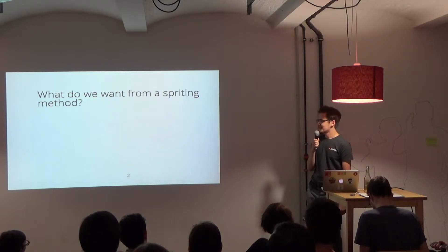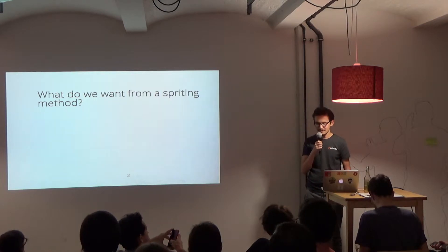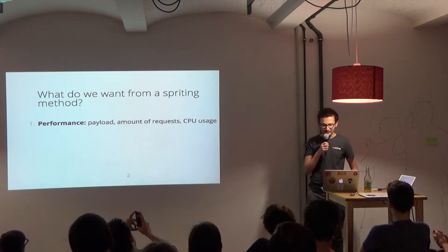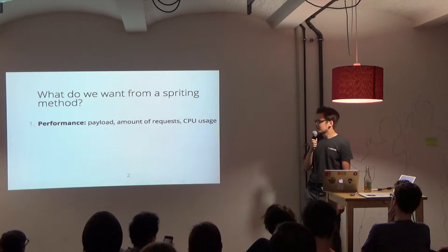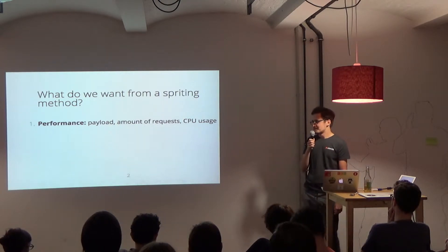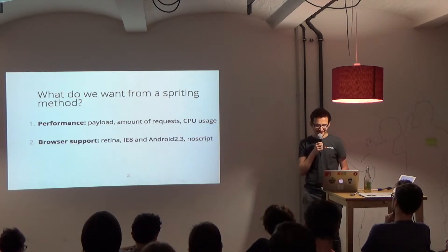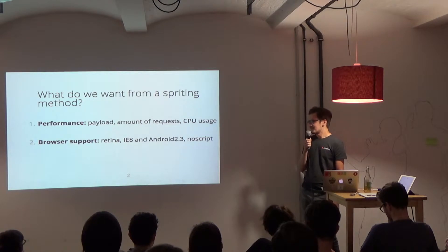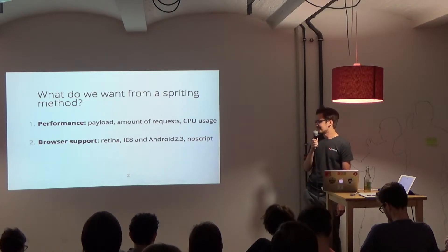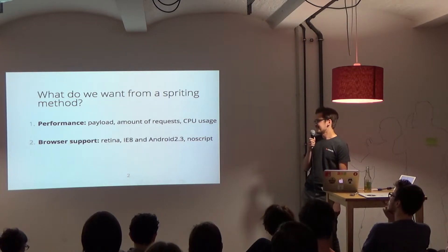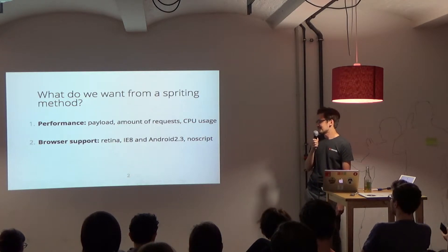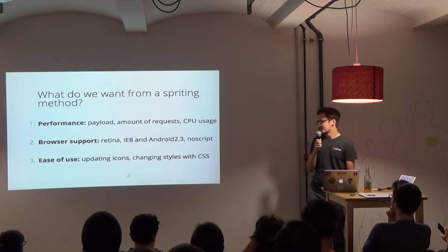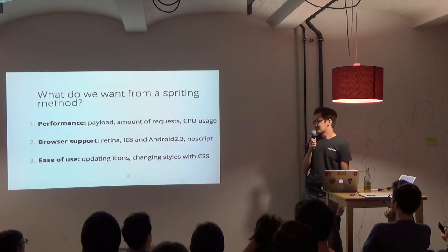But first we have to define a feature set that we expect from such a method. We have to consider performance, not just in terms of payload and amount of requests, but also CPU usage, which is quite important especially on mobile devices when it may drain the battery. We would like to support all different browsers, retina displays, IE8 and Android 2.3, and at Zalando sometimes we even have to support a no-JavaScript solution. We'd also like it to be easy to add new icons, update icons, and style them with CSS.